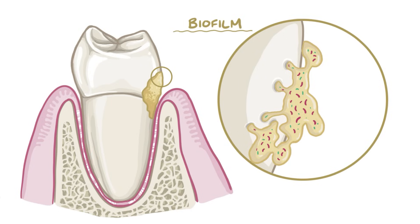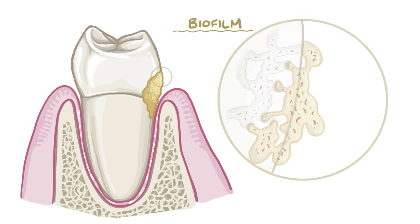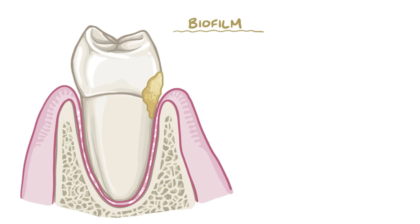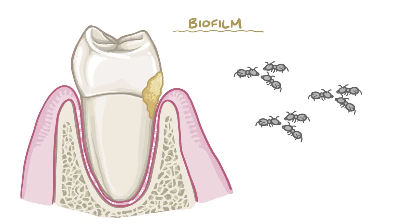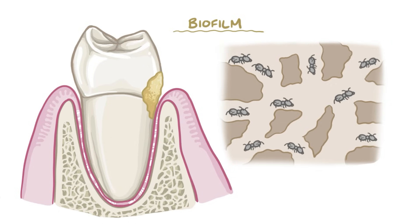Compared to a microcolony, the bacteria in a biofilm communicate with each other via chemical signaling, and together they create a complex system where some bacteria work on tunneling between the microcolonies and to the surface in order to bring in a steady supply of food. As an analogy, if bacteria were ants, then a microcolony would be a tiny group of ants each doing its own thing, whereas a biofilm would be an ant farm with complex tunnels and rooms, with each ant carrying out a specialized task.